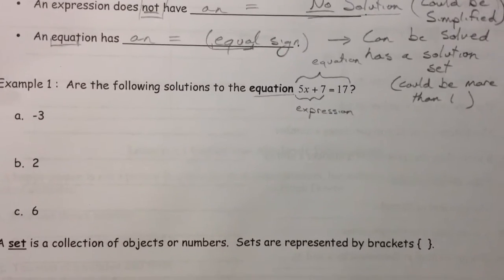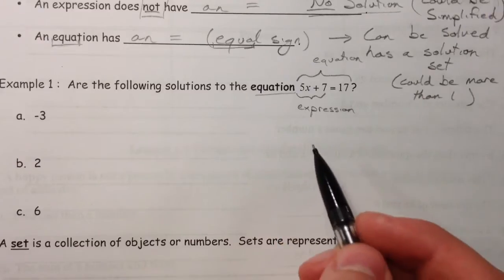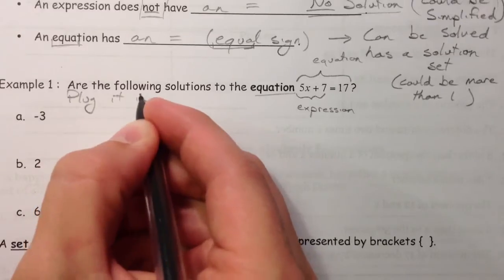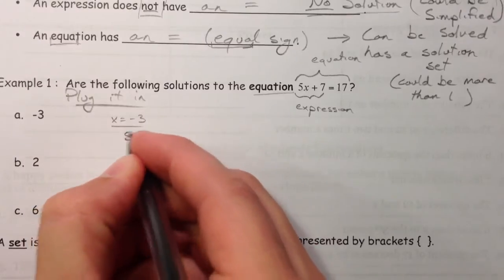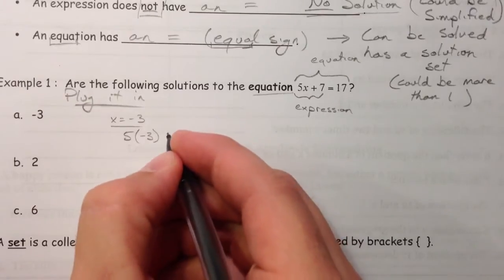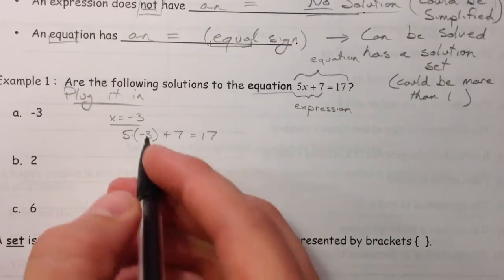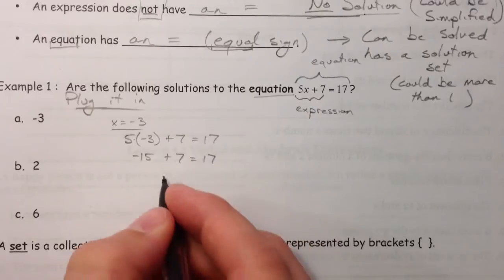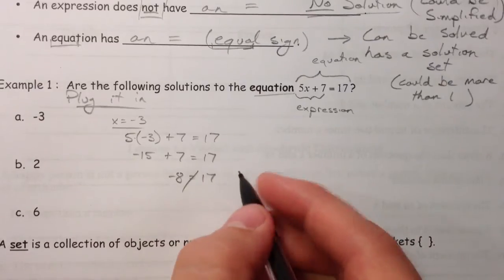So how do you determine solutions? Well, are the following solutions. So is negative 3 a solution to this equation? And so let's plug it in. So let's say x equals negative 3. Is it a solution? Well, 5x means 5 times x. So I'm going to do 5 times negative 3 and just put it in parentheses like that. Because when I put it in parentheses, that means multiplication. So that's negative 15 plus 7. So that is negative 8. Does negative 8 equal 17? No. So not a solution.